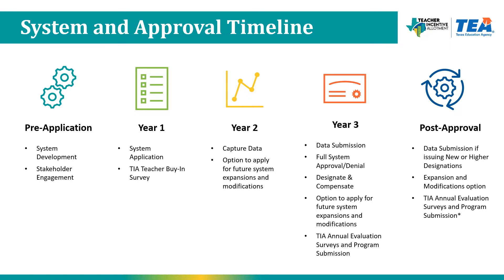After TEA reviews the results of data validation, they will issue system approval decisions. If the district system is approved, their designations will be processed and will calculate their first year of allotment funds, and they can then begin compensating teachers. They have the continued option to apply for system expansions and modifications. Once the system is approved, the district is required to complete an annual evaluation survey and program submission. After full system approval, the district has the option each fall to submit new or higher designations and data.